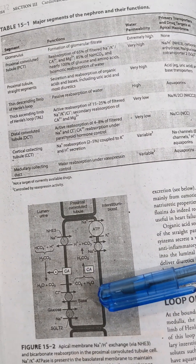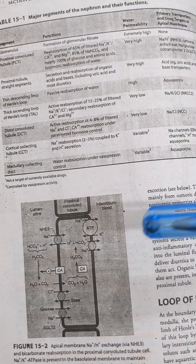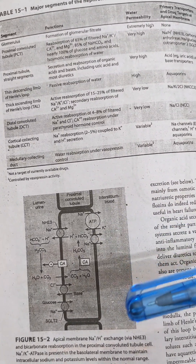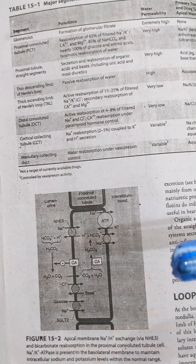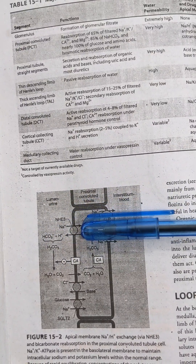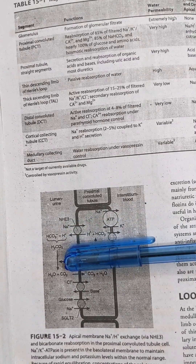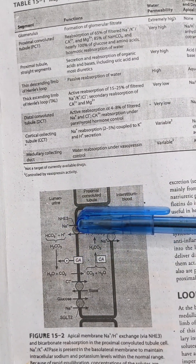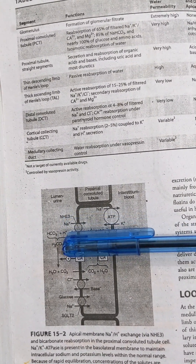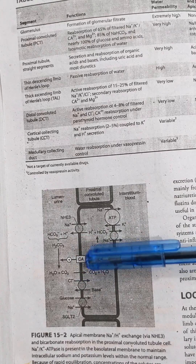In the proximal convoluted tubule, sodium is exchanged via the sodium-hydrogen exchanger NHE3 — a sodium-hydrogen exchanger. Once protons are secreted into the lumen via NHE3, they combine with bicarbonate ions to form carbonic acid.